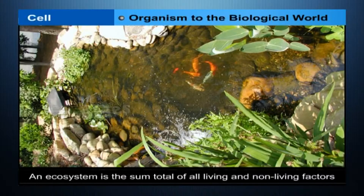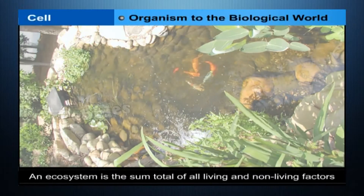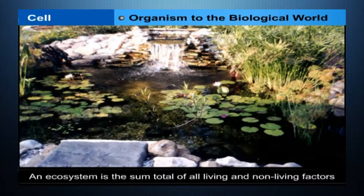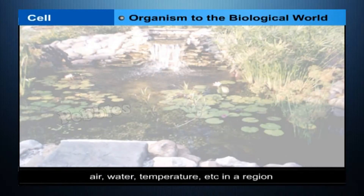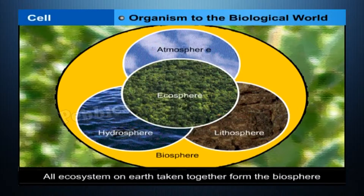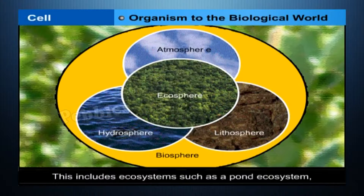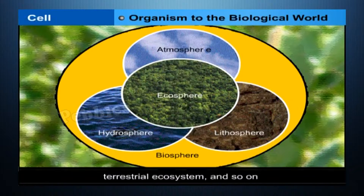An ecosystem is the sum total of all living and non-living factors — air, water, temperature, etc. — in a region. All ecosystems on earth, taken together, form the biosphere. This includes ecosystems such as a pond ecosystem, terrestrial ecosystem, and so on.